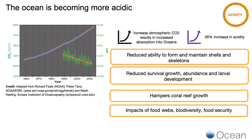Increased acidity hampers coral reef growth directly — corals living in more acidic waters tend to grow much more slowly and have much less success at reproduction. A more acidic ocean can affect food webs, biodiversity, and human food security, because more than a billion people live near the ocean and depend on ocean fish for their food and well-being.